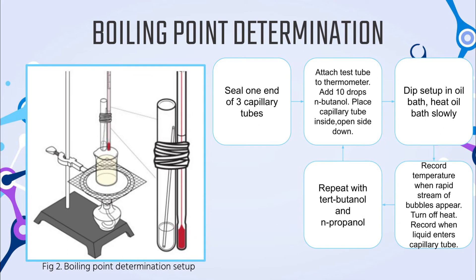For the boiling point determination method, a 1 mm diameter and 6 cm length capillary tube was prepared with one end sealed. A rubber band attached a 5 mL test tube to the bulb end of a thermometer, and about 10 drops of liquid sample were added into the test tube. The capillary tube was inserted with its open end immersed in the liquid sample, and the setup was dipped in an oil bath and slowly heated. Random intermittent bursts of bubbles were observed as temperature approached the boiling point; the temperature was recorded when a rapid and continuous stream of bubbles appeared. The heat was turned off and the temperature at which liquid entered the capillary tube was recorded, reported as a range, for n-butanol, tert-butanol, and n-propanol. N-butanol is expected to have the highest boiling point due to its longer 4-carbon chain, followed by n-propanol, while tert-butanol is expected to have the lowest due to branching, making it more spherical and compact.